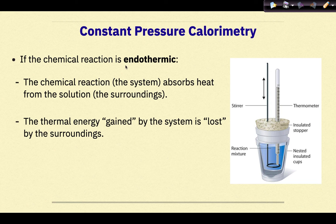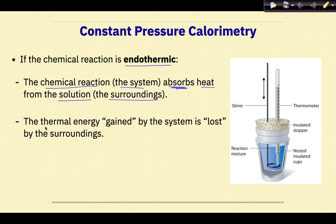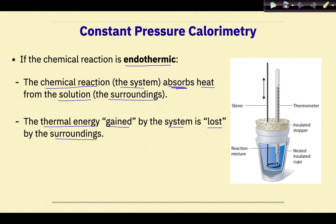If the chemical reaction is endothermic, the chemical reaction, the system, absorbs heat from the solution, the surroundings. The thermal energy gained by the system is lost by the surroundings. So the chemical reaction that occurs here absorbs energy. As it absorbs energy from the solution, we'd see a drop in temperature — the solution will lose energy and we will see a decrease in the temperature.